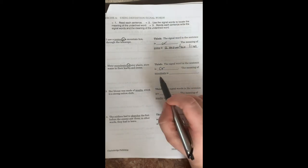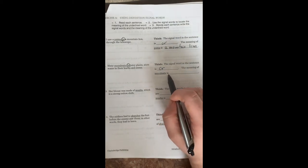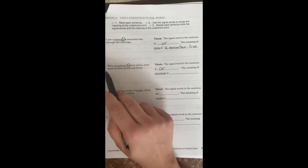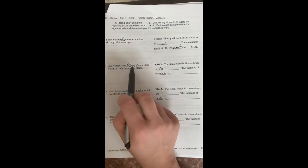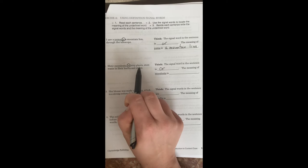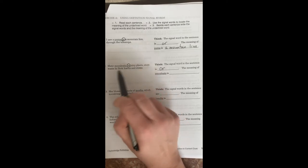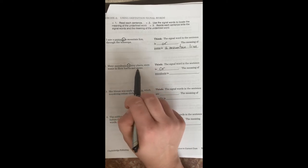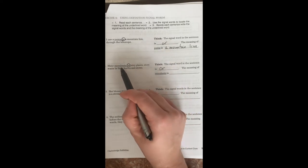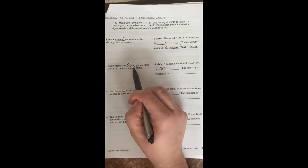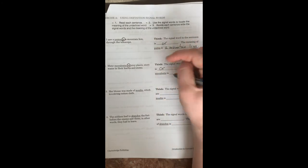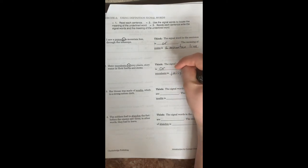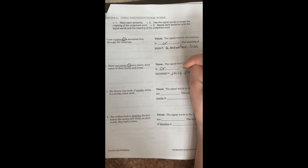The meaning of succulents is. Okay, let's see. Let's read the sentence again. Many succulents or juicy plants store water in their leaves and stems. Oh, perfect. So I know that a succulent kind of means like a juicy plant. An example of that would be something like an aloe vera plant. You might have one in your house right now. So a juicy plant.